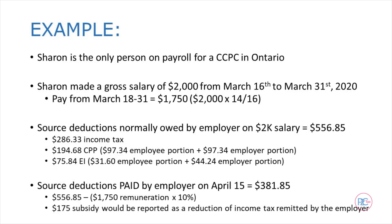So let's walk through a quick simplified example. Let's say Sharon is the only person on payroll for a CCPC operating in Ontario. Between March 16th to March 31st, Sharon made a gross salary of $2,000. If we prorate this salary by the number of days between March 18th to March 31st, her salary during this period is $1,750. Normally, on a $2,000 salary, the source deductions calculated using CRA's tax tables would be $286.33 of income tax, $194.68 of CPP including both the employer and employee portions, and $75.84 of EI, also including the employer and employee portions. The total deductions would be $556.85.